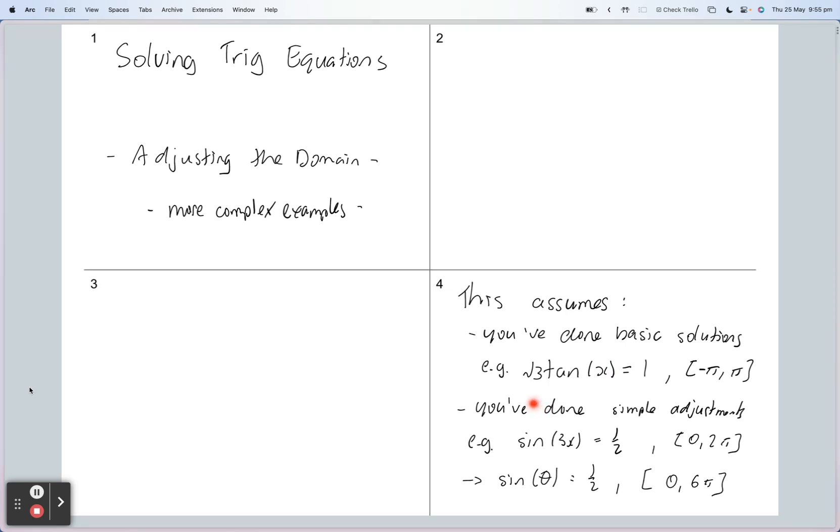Secondly, it would be nice if you've done some simple adjustments. For example, you've been given something like sine of 3x equals a half. So the argument is a little more complex, it's not just a straightforward single variable, it's 3 times x. And then you've adjusted the domain by saying 3x equals theta, so I'm going to triple the endpoints of the domain. That becomes 0 and 6π and then solving from there.